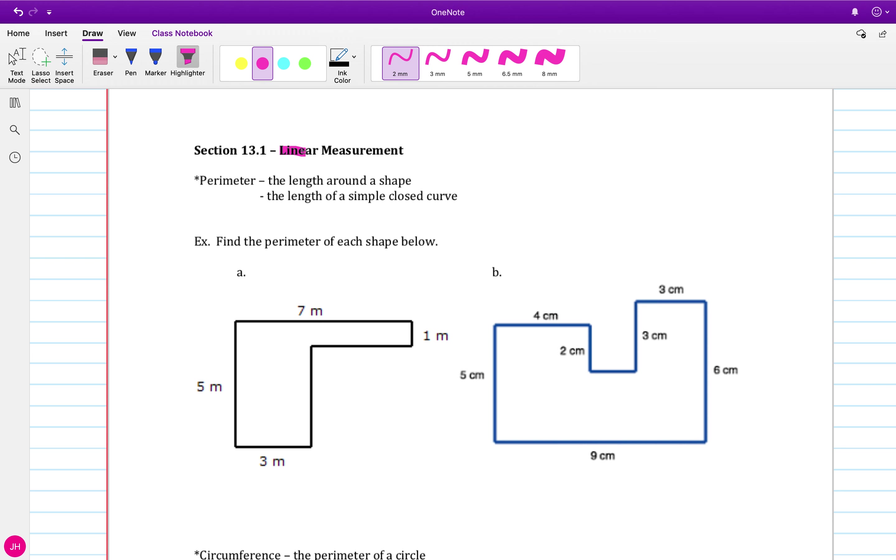So to start with, I want to measure the perimeter. The perimeter is the length around a shape. Or if we want to get really specific, it needs to be a simple closed curve, going back and using some of those definitions that we had before. We can't have something that crosses because it's not simple. Or we couldn't measure the perimeter of something that's not closed. So we have to have simple closed curves in order to measure the perimeter.